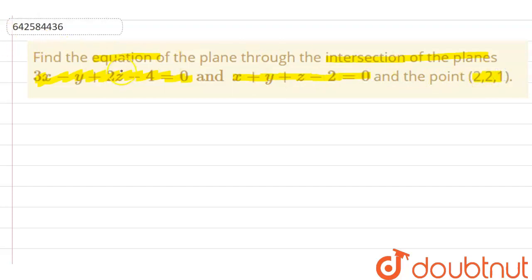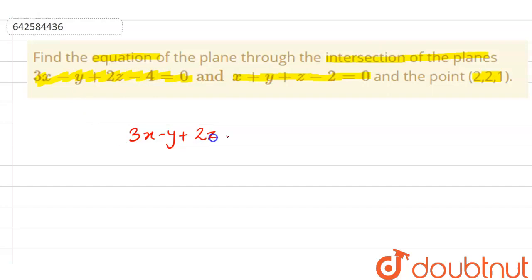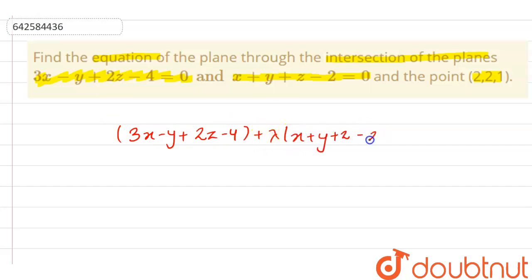The question is to find the equation of the plane passing through the intersection of the two planes. So we can write the equation of the plane passing through their intersection as: 3x minus y plus 2z minus 4, plus lambda times x plus y plus z minus 2.